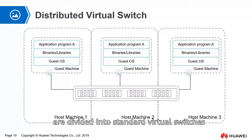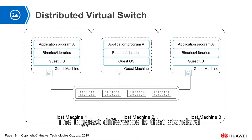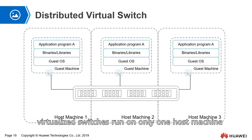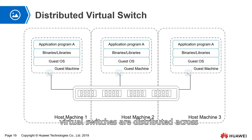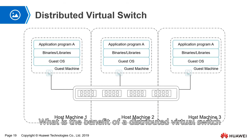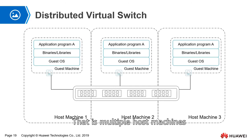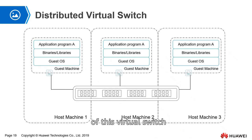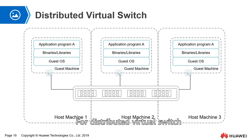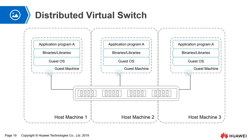Virtual switches are divided into standard virtual switches and distributed virtual switches. The biggest difference is that standard virtual switches run on only one host machine, while distributed virtual switches are distributed across multiple host machines. The benefit of a distributed virtual switch is that multiple host machines share one virtual switch — you only need to modify the configuration of this virtual switch and all host machines will be updated. Distributed virtual switches are a necessary condition for virtual machines to do hot migration. Huawei only supports distributed switches in its virtualization solution.